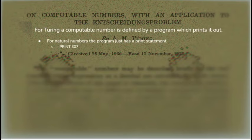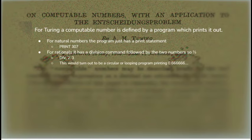Now, let's see how these map onto the Turing computable numbers. For natural numbers, a program that just has a print statement will compute them. So the natural number 3 or 7 is computed by a program that says print 3 or 7. For rationals, you have a division instruction followed by the two numbers. So the rational number 2 thirds would be encoded as div 2, 3.